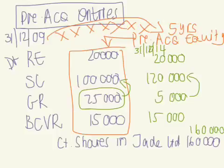If there is a non-controlling interest in the group structure — where the parent company does not own 100% of the shares — this is the stage where you would calculate the NCI share of the subsidiary's equity. But in this example it was not applicable, so we carry on to eliminate intergroup transactions.